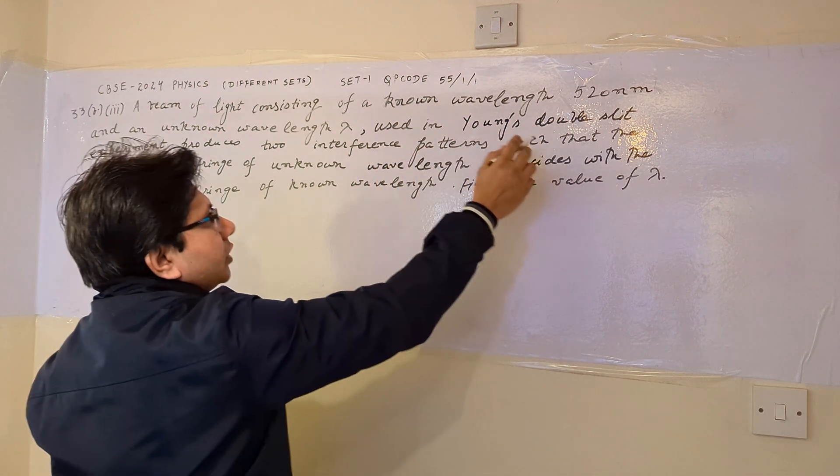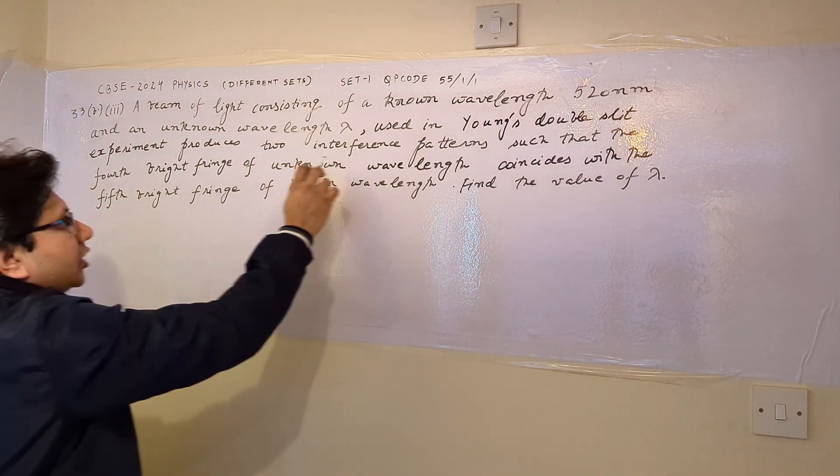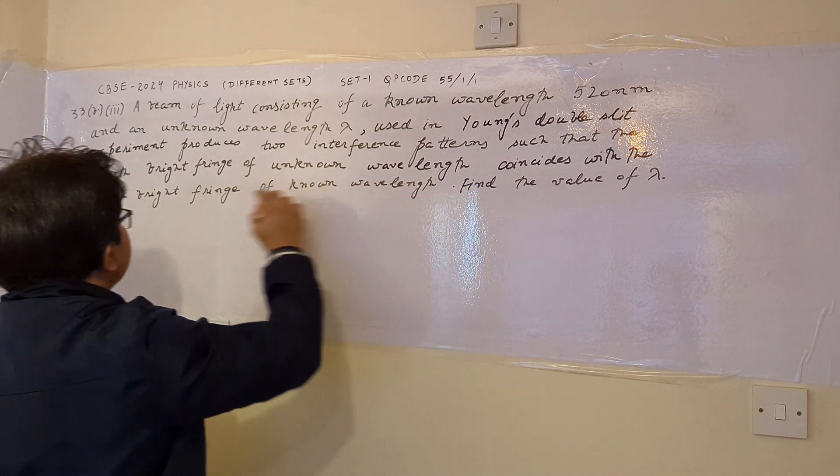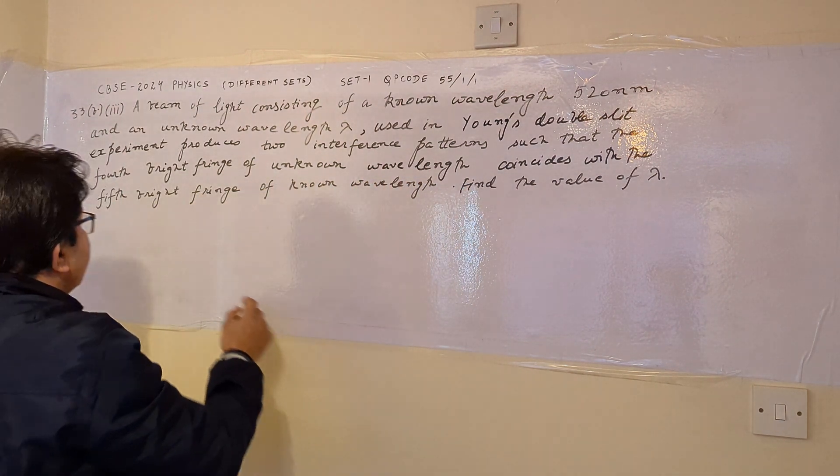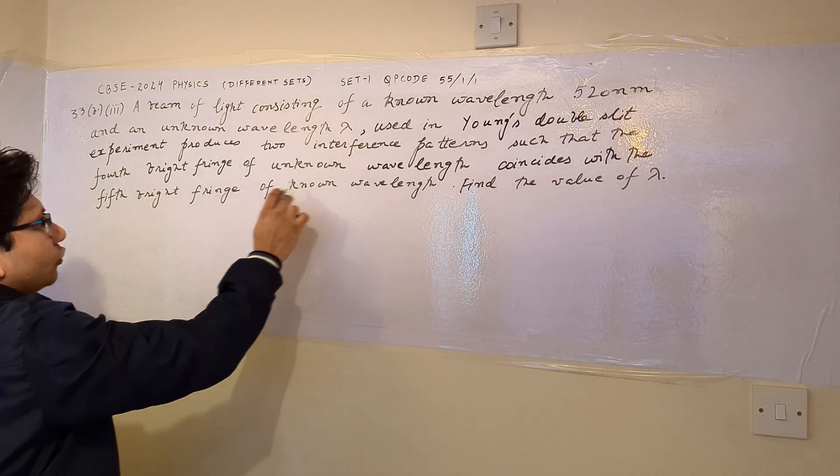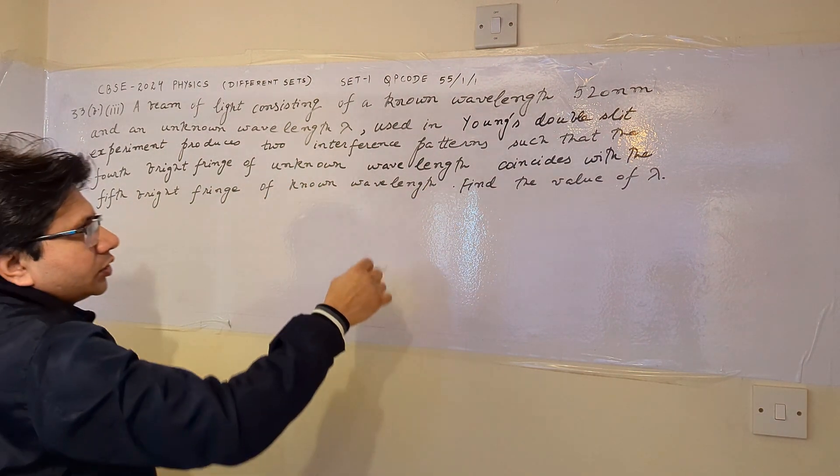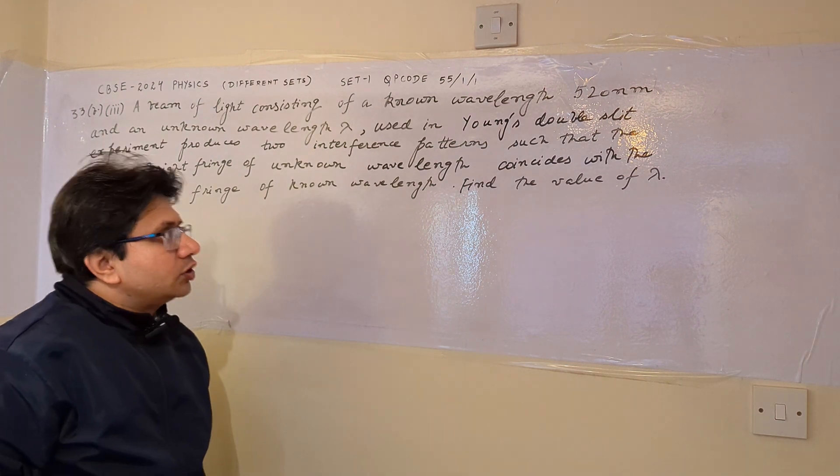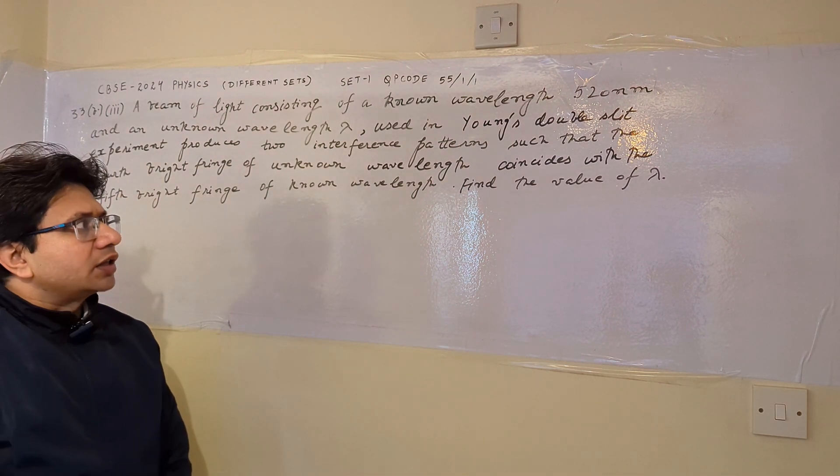a beam of light consisting of known wavelength 520 nanometer and an unknown wavelength lambda used in Young's double slit experiment produces two interference patterns such that the fourth bright fringe of unknown wavelength coincides with the fifth bright fringe of the known wavelength. Find the value of lambda. So the problem is based on the topic Young's double slit experiment